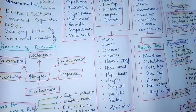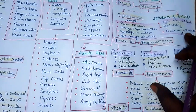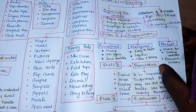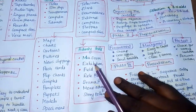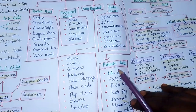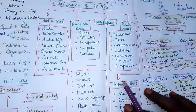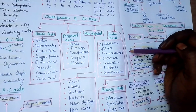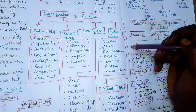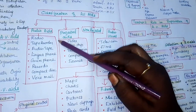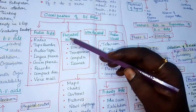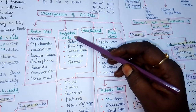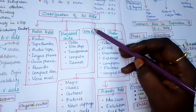Before seeing how to prepare AV aids, let us look at the classification of audiovisual aids. Audiovisual aids are classified as: audio aids, projected aids, non-projected aids, audiovisual aids, and activity aids. Each category has its own importance.